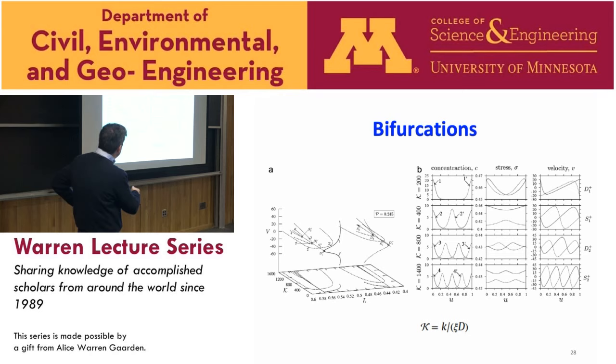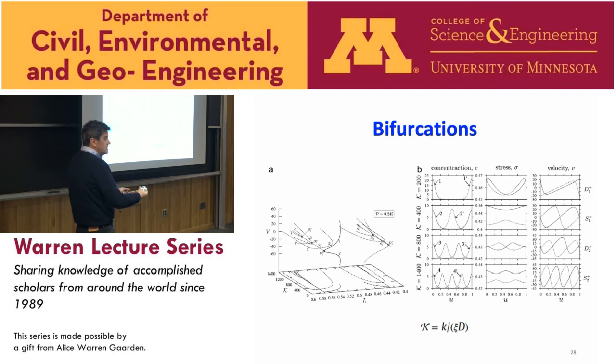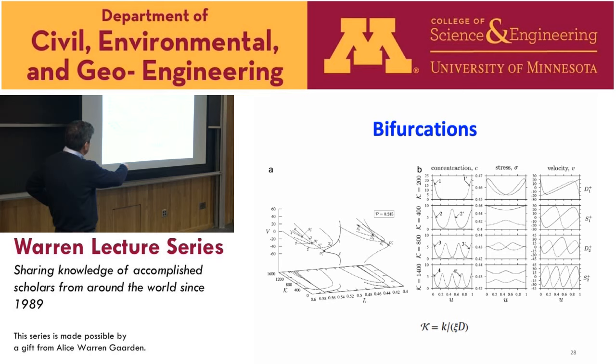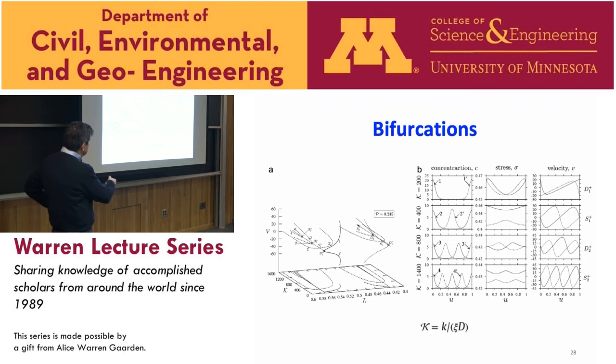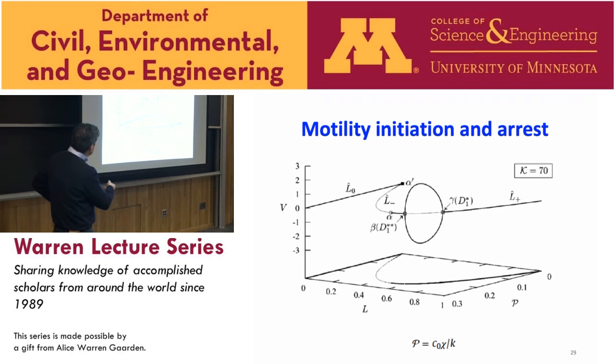The right side shows the configuration—concentration c, stress sigma, and velocity v inside the body. Velocity, stress, and concentration are all inhomogeneous. There are symmetric solutions that are static and non-symmetric ones that appear in pairs: the cell can move left or right depending on which side the motors concentrate. If motors concentrate on the right side, the cell moves to the right, and vice versa.